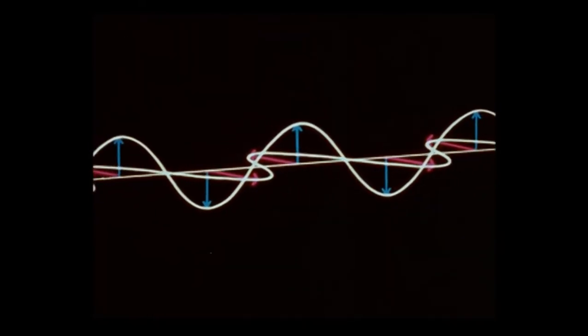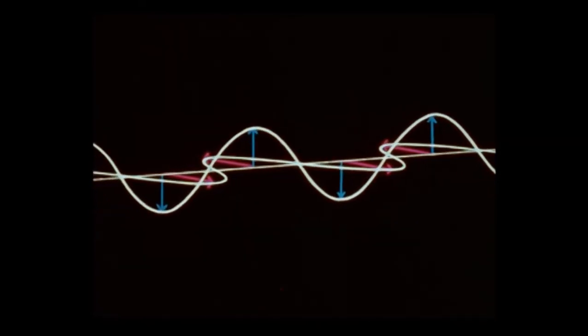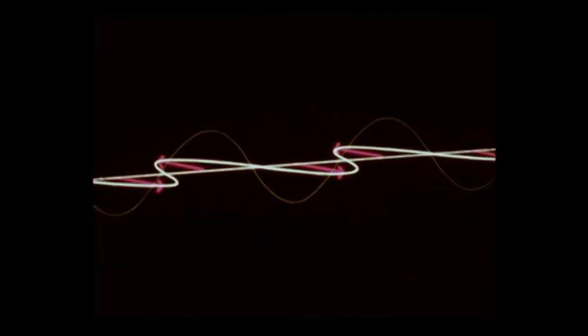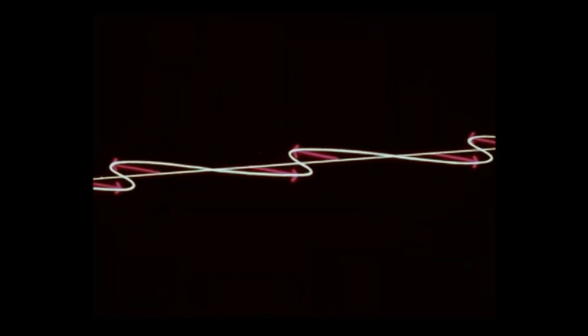The polarity of an antenna is determined by the plane of the E field. To obtain a maximum signal, both the transmitting and receiving antennas must be in the plane of the E field.